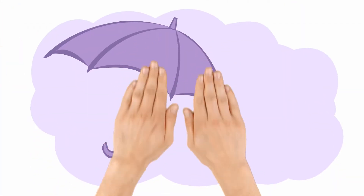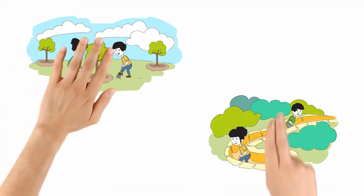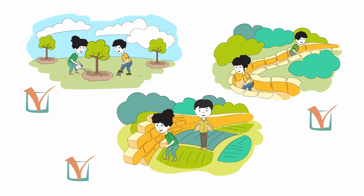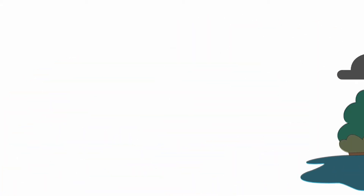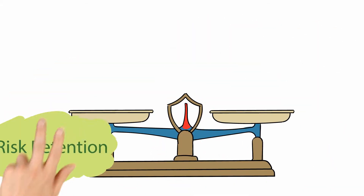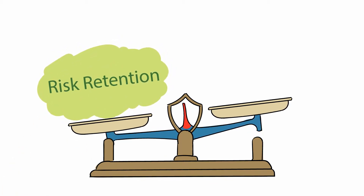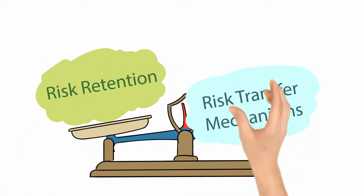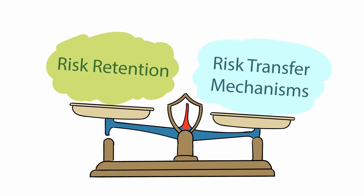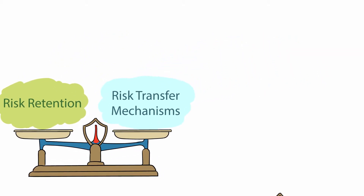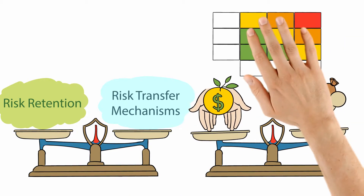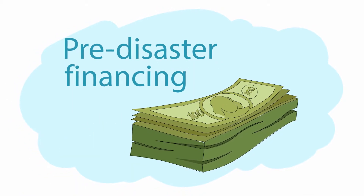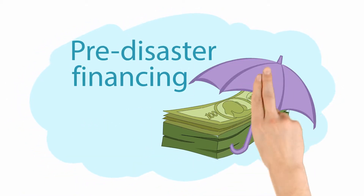Two, retention and transfer. However, even if you put all preventive measures in place, some residual risk still remains. Some of the impacts from climate hazards can be absorbed through risk retention, while other times it is important to find a risk transfer mechanism. In the retention and transfer phase, it is important to conduct a cost-benefit analysis, based on the risk analysis, to determine whether a type of pre-disaster financing — that is, financing before a hazard strikes, such as insurance — can help.